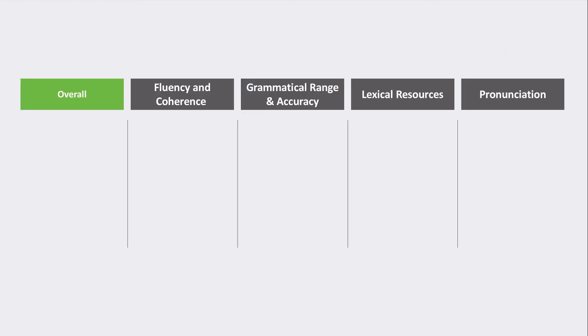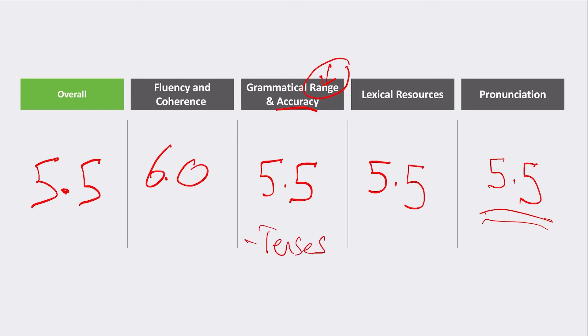In terms of pronunciation, I would put her in that 5.5 range. Vocabulary was reasonably good, so 5.5. Grammatical range and accuracy - accuracy was good, range was less good, so that's 5.5. Fluency and coherence I thought was quite good at 6.0. So overall a solid 5.5. I would definitely advise her to work on pronunciation. Her vocabulary wasn't too bad, but I would definitely talk to her about improving her grammatical range, especially in terms of tenses. Try and expand the number of tenses she's using and try to use a couple more difficult tenses.